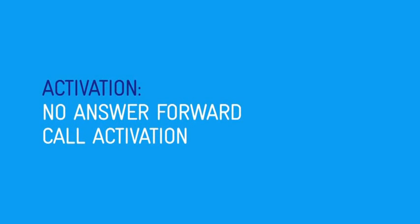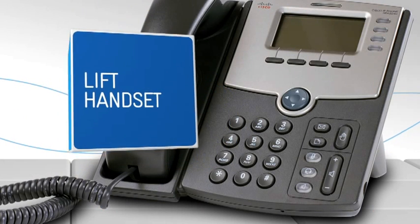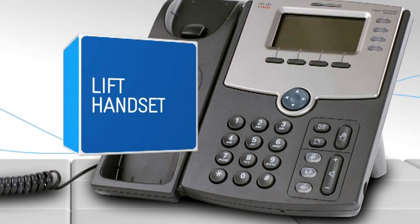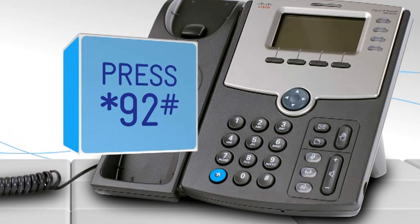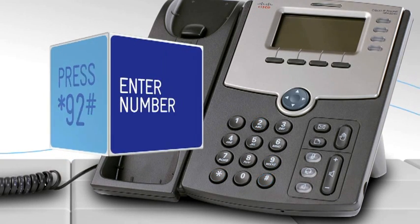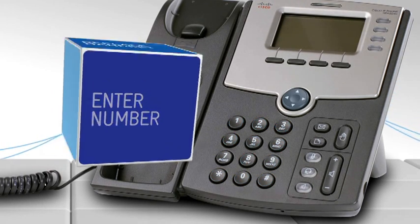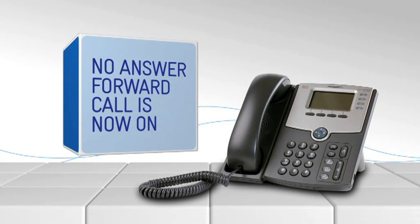No answer forward call activation. To forward your calls when there's no answer, lift the telephone handset. Press star, nine, two, hash. Enter the number you wish calls to be forwarded to. Replace the handset. No answer forward call is now on.